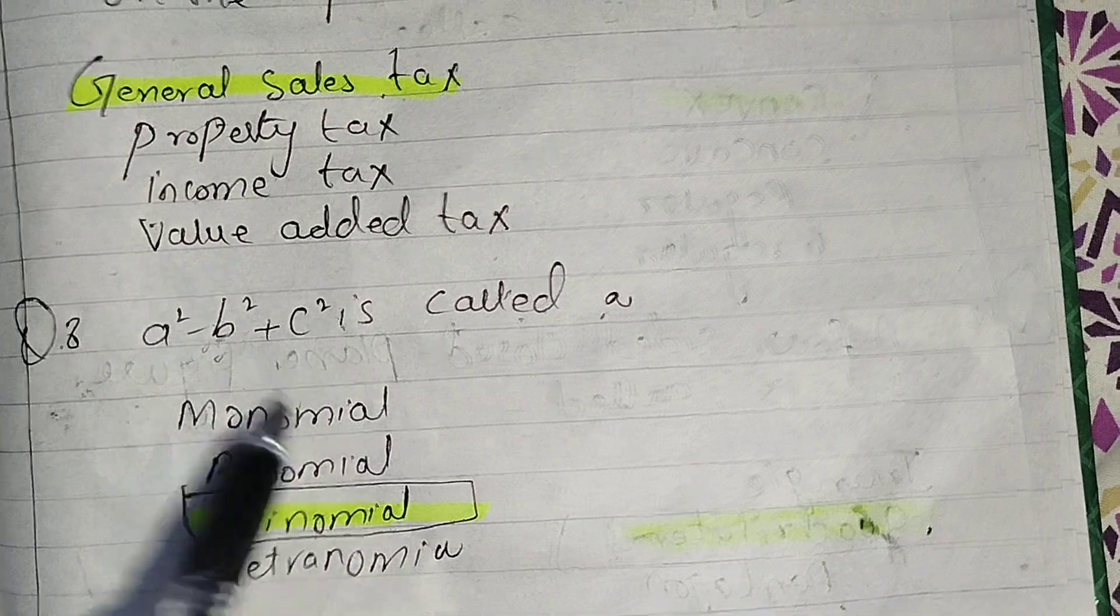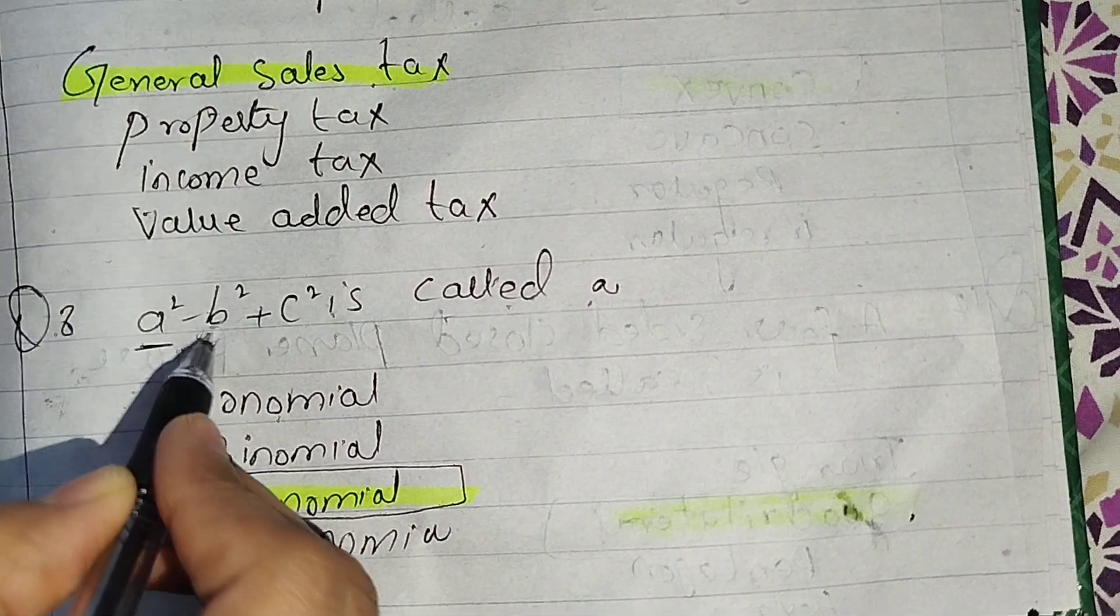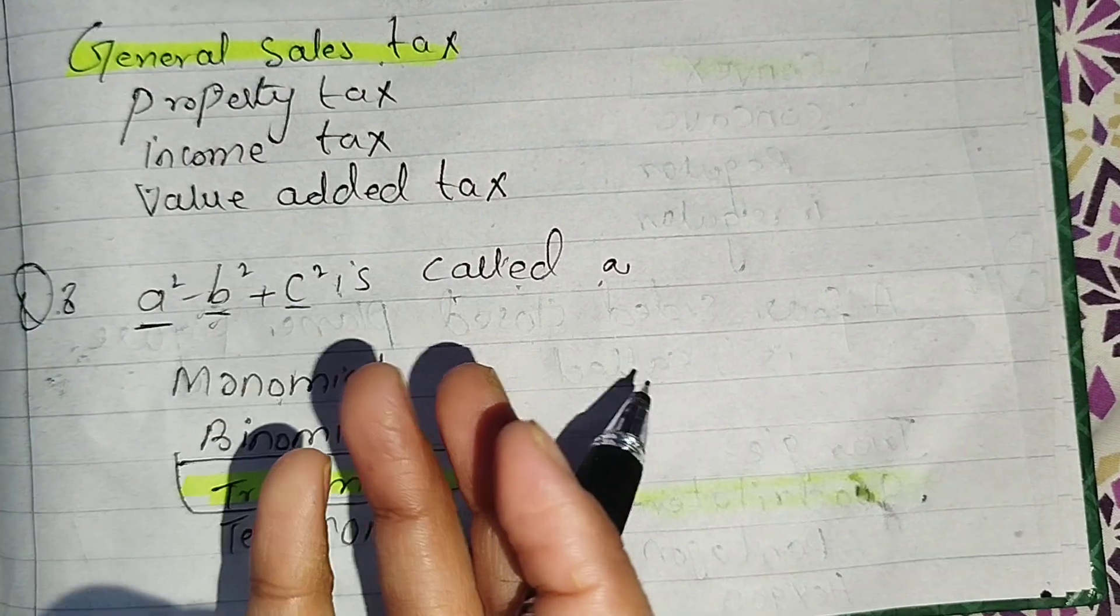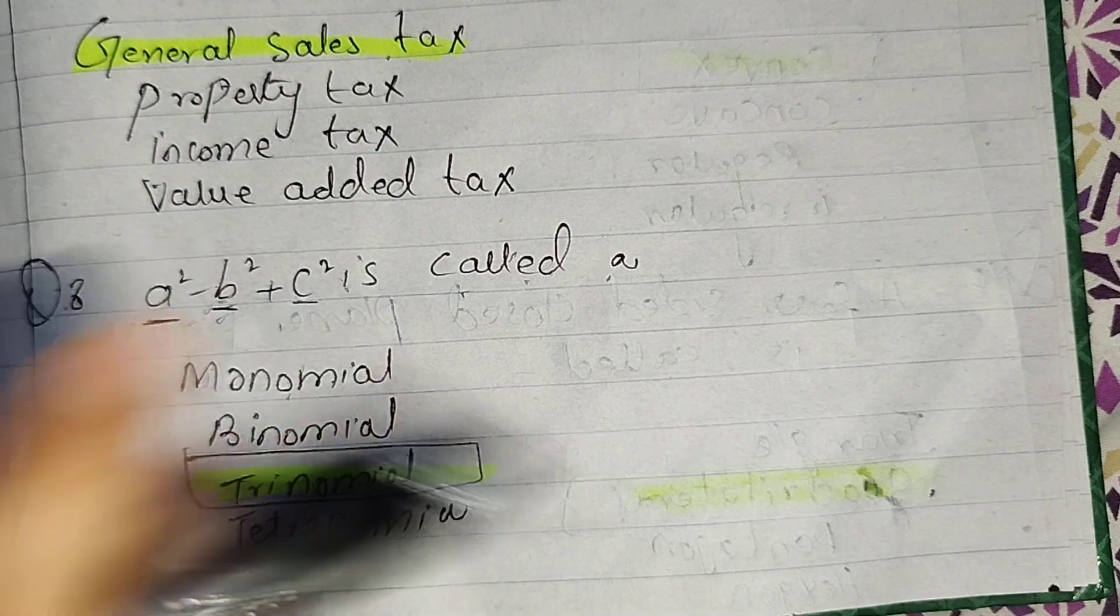Next, this is called A, B, C. It is called monomial, binomial. Look, this is first A, B, C, three terms, three letters. So this is trinomial.